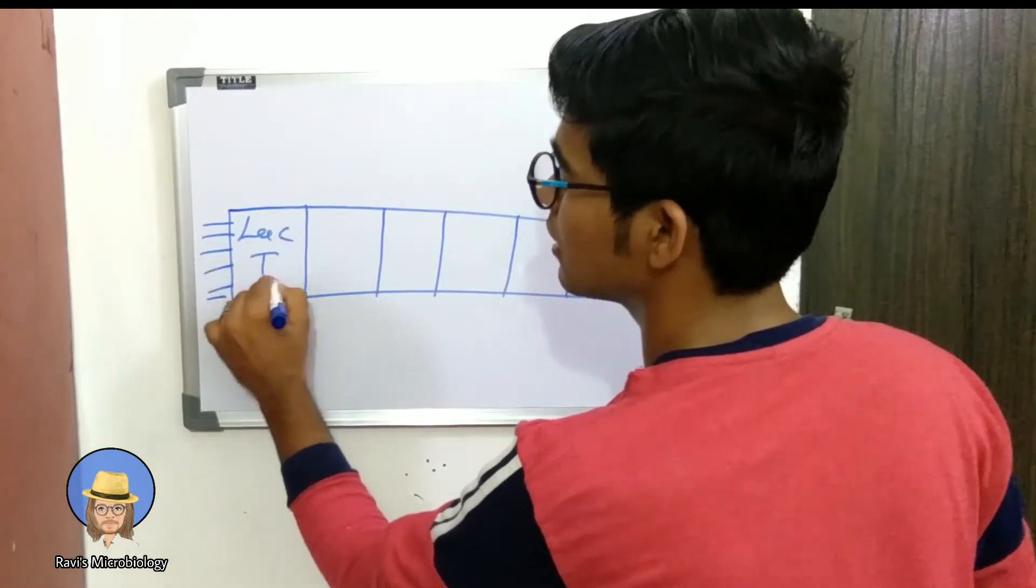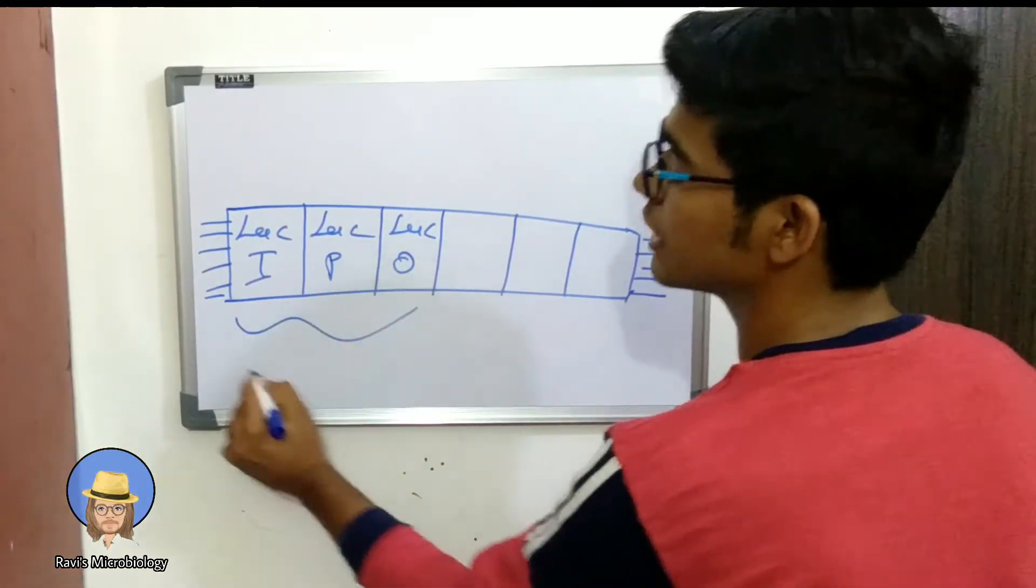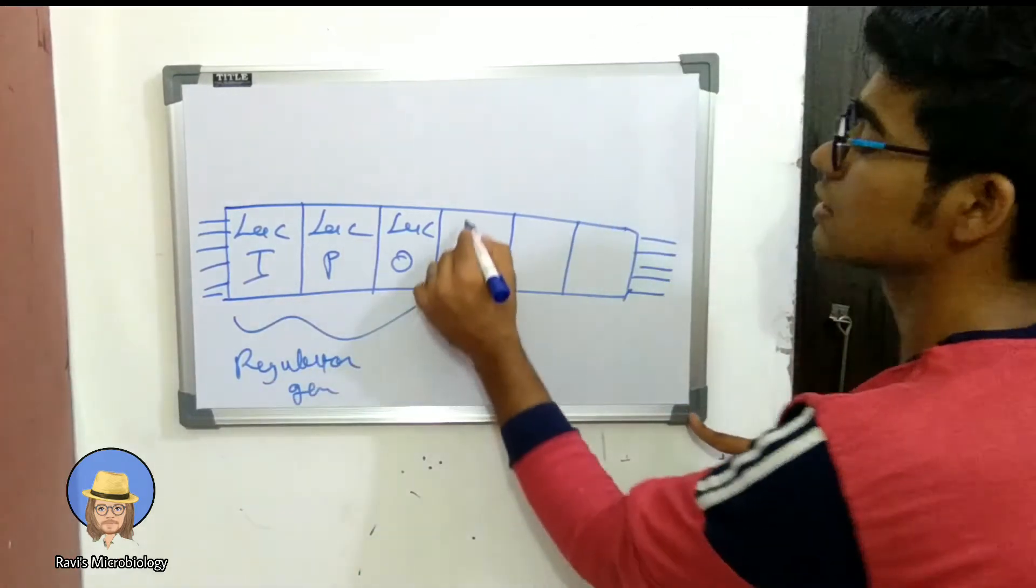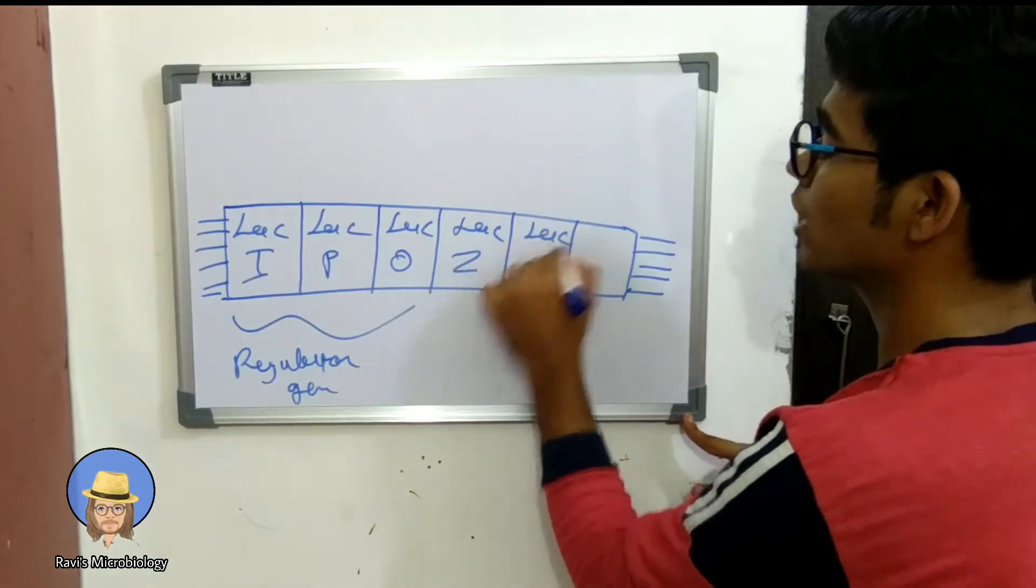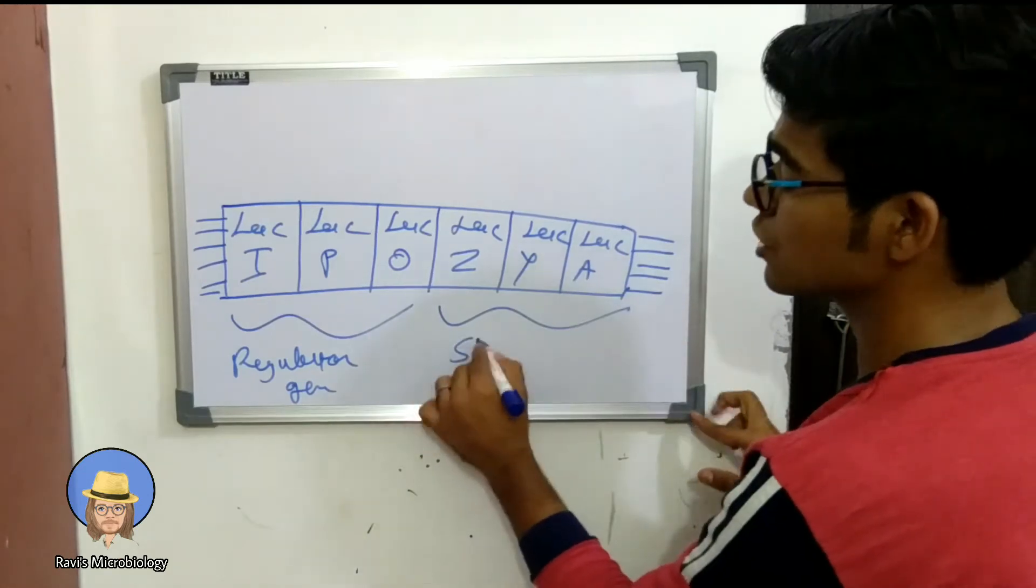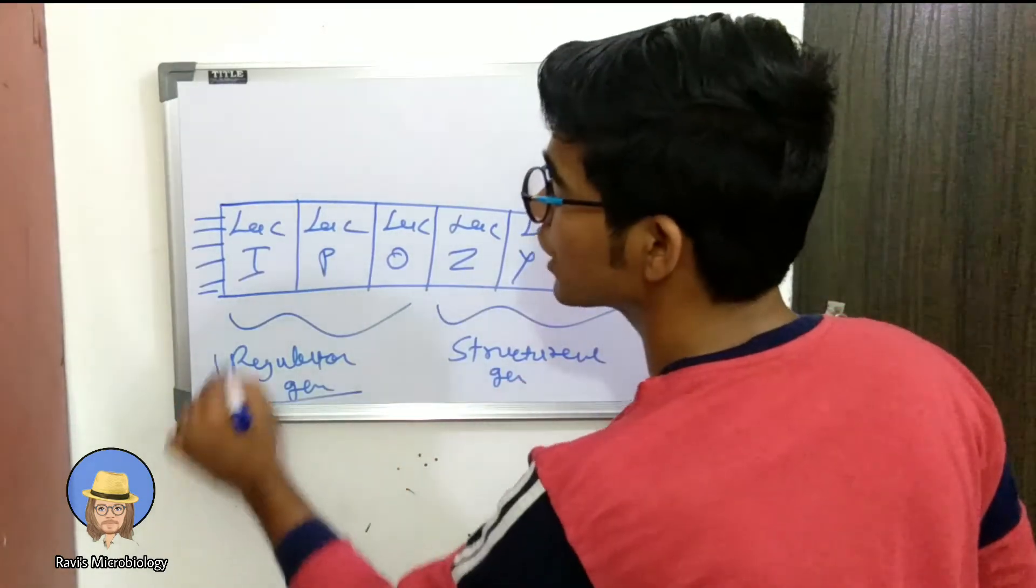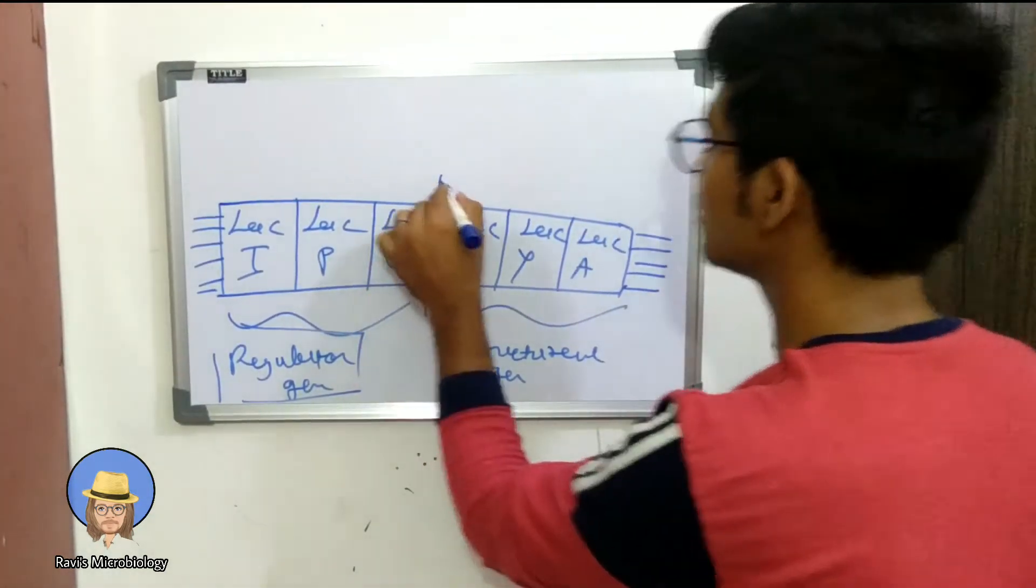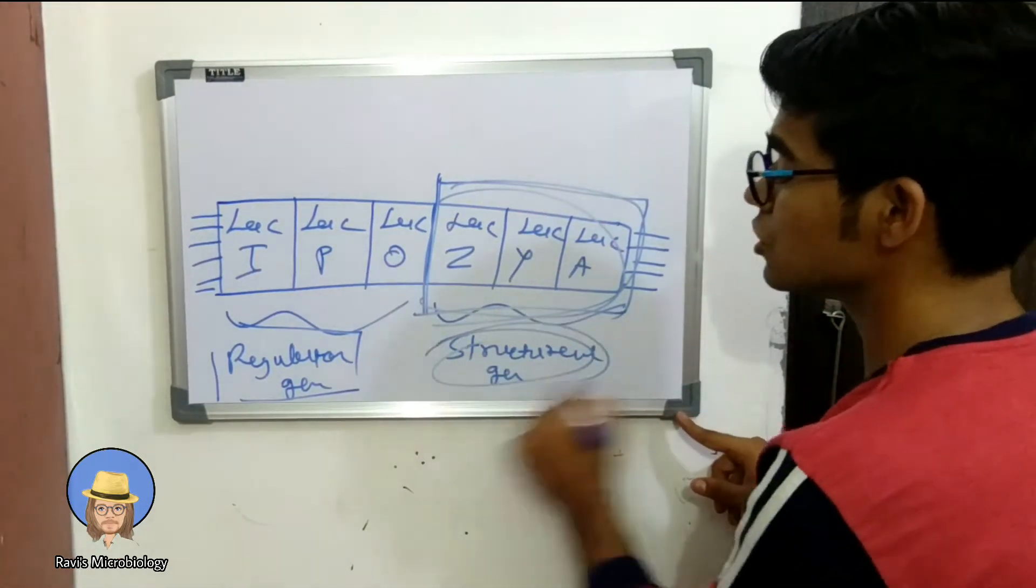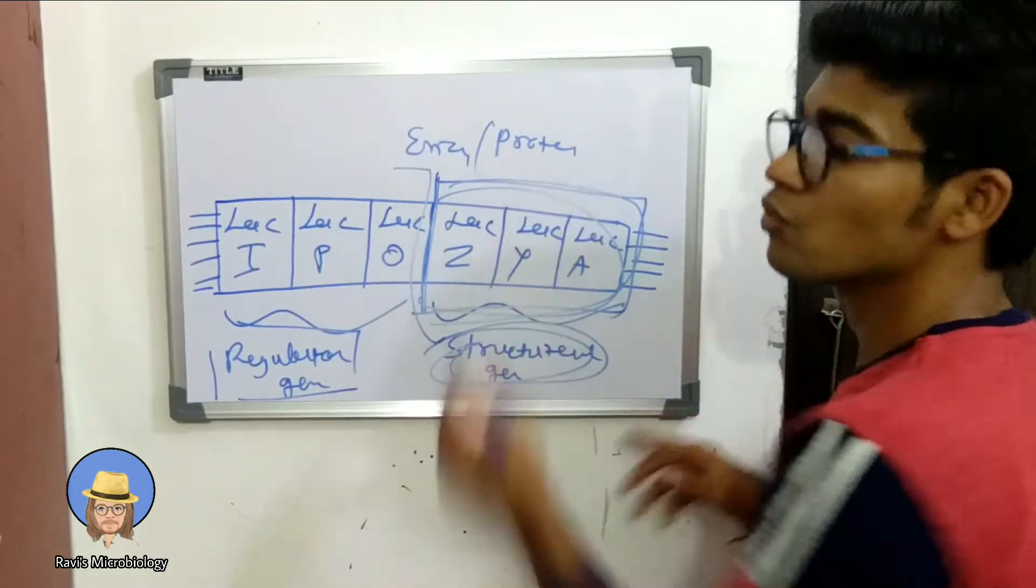Lac I, lac P, and lac O are regulatory regions, whereas lac Z, lac Y, and lac A, these three are structural genes. The function of regulatory regions is to regulate the process or the functions of structural genes. The function of structural genes is to produce some enzymes, some proteins to work on the substrate.